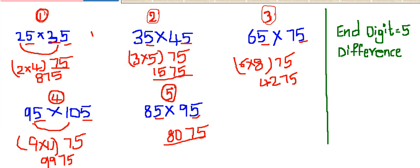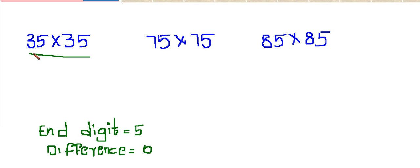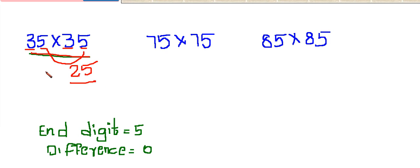See one more model. For this type of problem, when the unit digits are 5 and the first digits are also the same, we can use this shortcut trick. First, 5 into 5 is 25 — there is no change in this. And 3 into the next digit of 3, that is 4. 3 times 4 is 12. So 1225 is the answer.